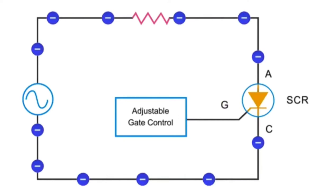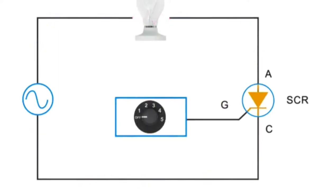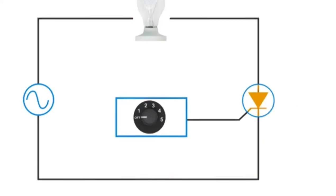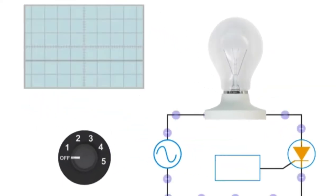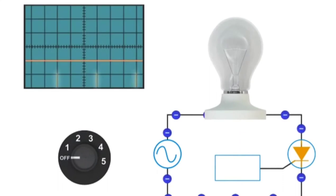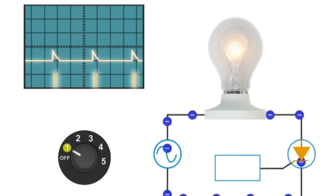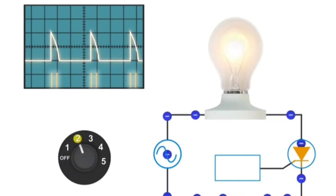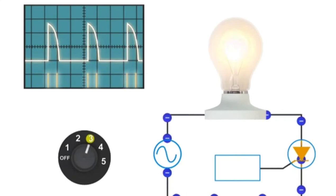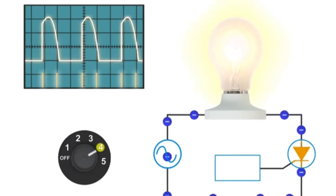A common application of SCRs is in lightbulb dimmers. Here is a circuit that contains a lightbulb and a SCR. As the switch at the gate controller is adjusted to control power in the AC circuit, note the timing of the gate pulse and the subsequent change in the waveforms. Also, observe that average current flow increases and the lightbulb becomes brighter.